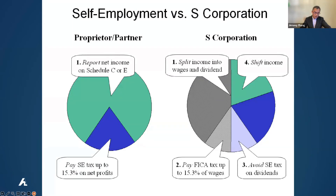If it's a Schedule C, you pay 15% of the income. So if you make a hundred thousand dollar net income, you're paying 15% — that's a fifteen thousand dollar self-employment tax.